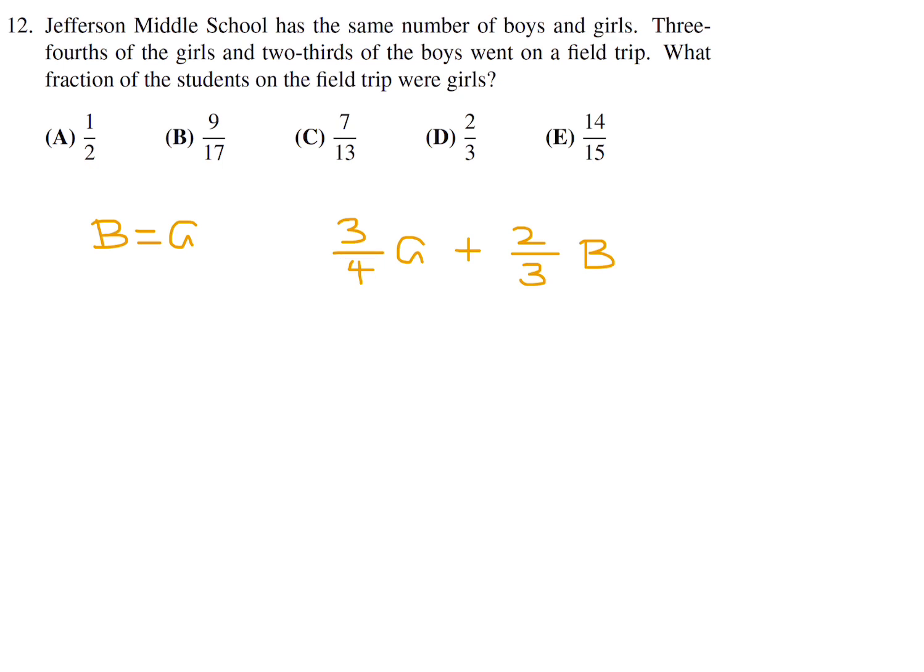I'm going to assign some numbers here. We're dividing by 4 and dividing by 3, so 3 times 4 is 12. 12 boys, 12 girls. Three over four of 12 would be 9, and two over three would be 8. We have 9 girls and 8 boys that go on the field trip, and therefore 17 students went on the field trip. What fraction of that is girls? There were 9 girls, so 9 of the 17. Number 12, the answer is B.